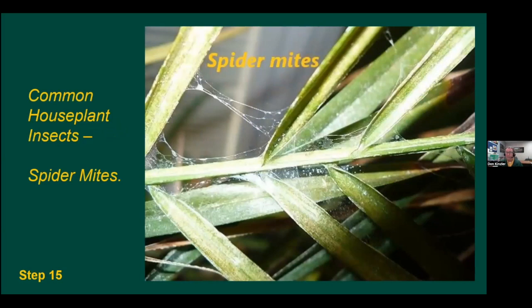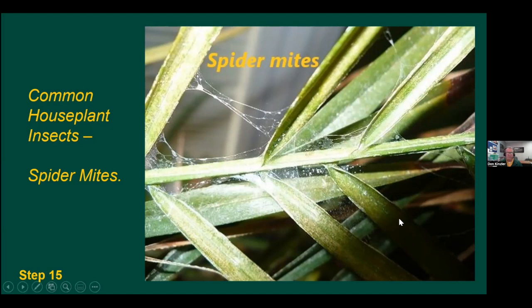Let's look at a couple of common houseplant insects. Spider mite damage shows as little tiny white dots on the leaves where spider mites have been sucking the sap. Spider mites are so tiny you usually can't see them directly — take a white sheet of paper, flick the leaves over it, and use a magnifying glass to see the tiny specks. By the time you see webbing and heavy leaf marking, the plant may not recover well, so look for spider mite injury early.